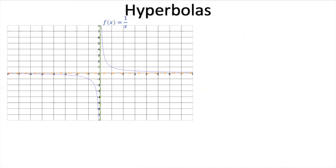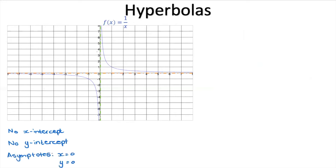Now that we've seen the basic graph of f(x) = 1/x, let's write down some basic observations. There is no x-intercept, no y-intercept, and the asymptotes are x = 0 (the y-axis) and y = 0 (the x-axis).